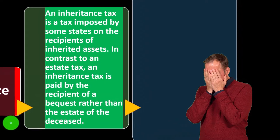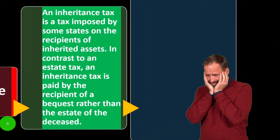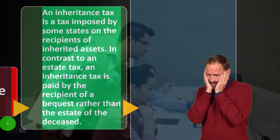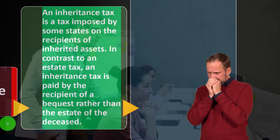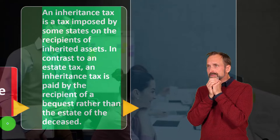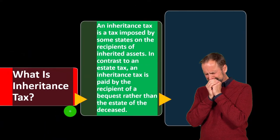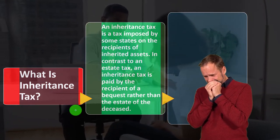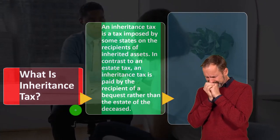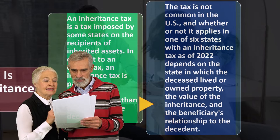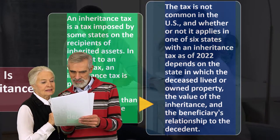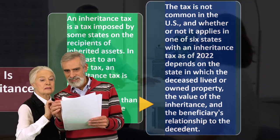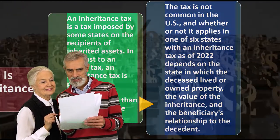In contrast to an estate tax, an inheritance tax is paid by the recipient of a bequest rather than the estate of the deceased. You wouldn't really think it would be taxed twice — either you pile up all the assets and tax the net value at that point, or you wait till the distribution goes to the individuals and tax it when the recipients receive it. The tax is not common in the US; as of 2022 only six states have an inheritance tax.